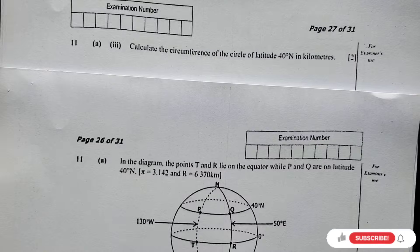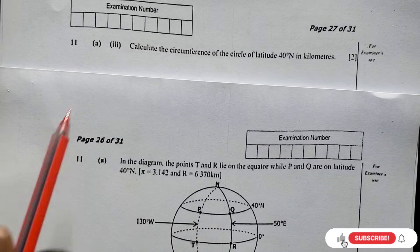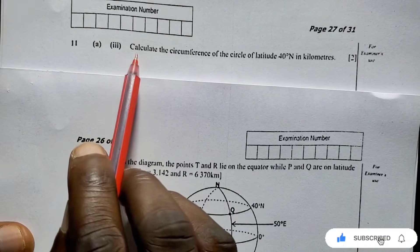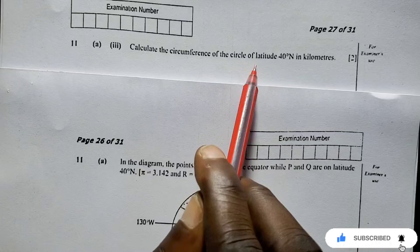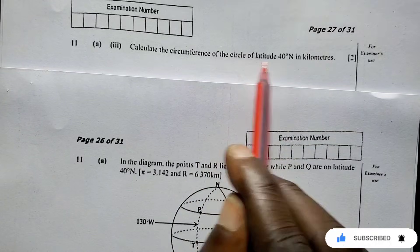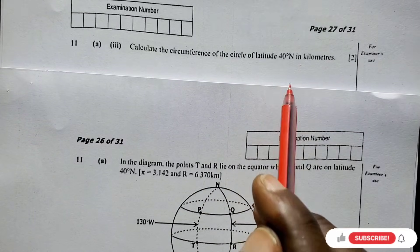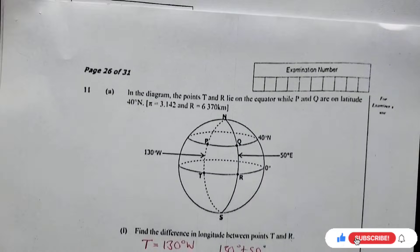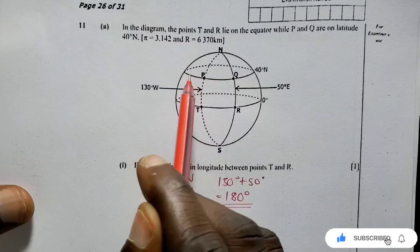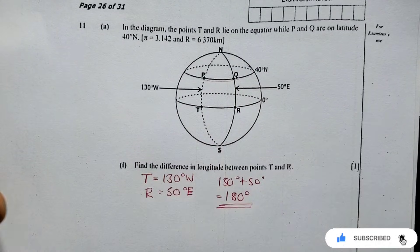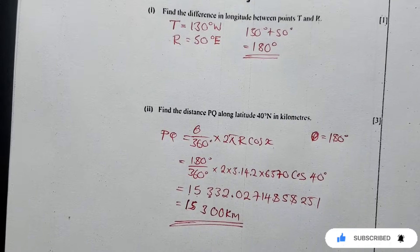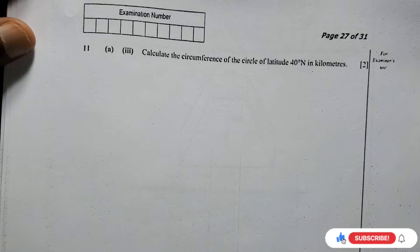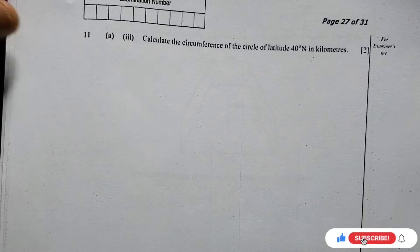The last earth geometry question is asking us to calculate the circumference of the circle of latitude 40 degrees north in kilometers. So we want to find the circumference of this circle of latitude. It is very simple. We're going to say circumference C is equal to 2πR cos x. So this is the formula we are going to use.